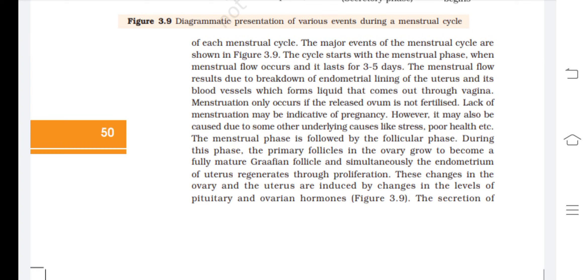The menstrual phase is followed by the follicular phase, during which the primary follicle in the ovary grows to become a fully mature Graafian follicle, and simultaneously the endometrium of the uterus regenerates through proliferation. These changes in the ovary and the uterus are induced by changes in the levels of pituitary and ovarian hormones.